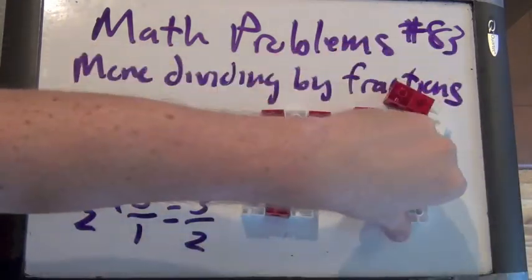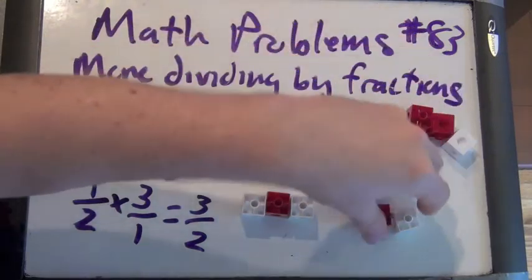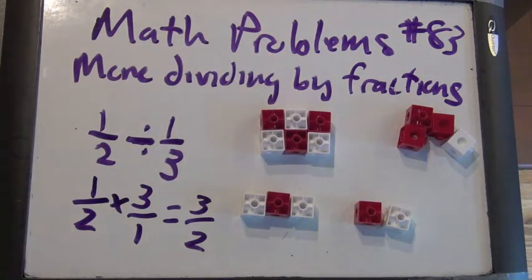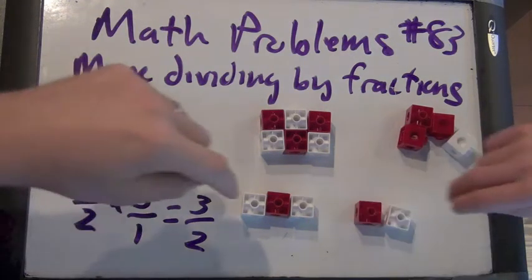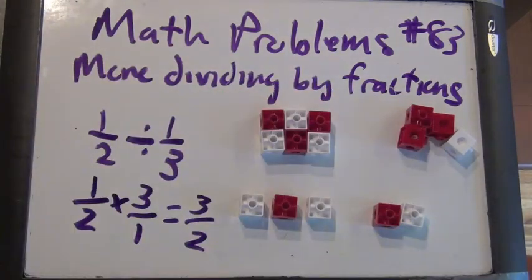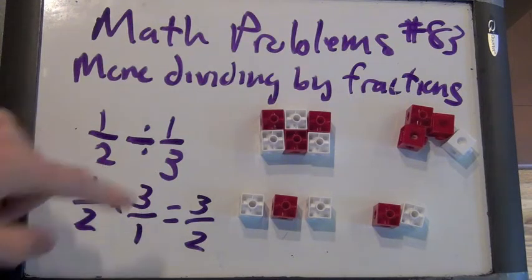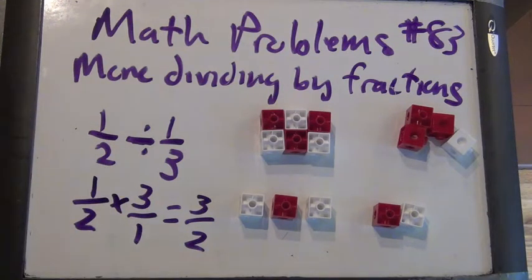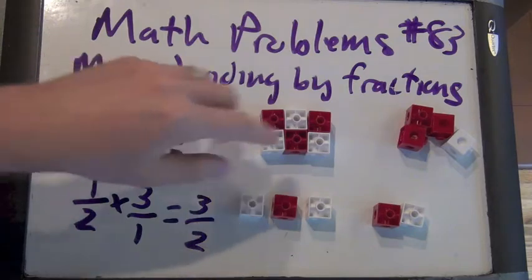So can you tell me what 1 half divided by 1 third looks like is going to be the same as? It looks like it's going to be the same as maybe this over that. Right. And how many blocks is this? That's 3. How many blocks is that? 2. So it's 3 halves. Hey, just like we found before. Pretty interesting, right? Alright, give me two other fractions we can divide.